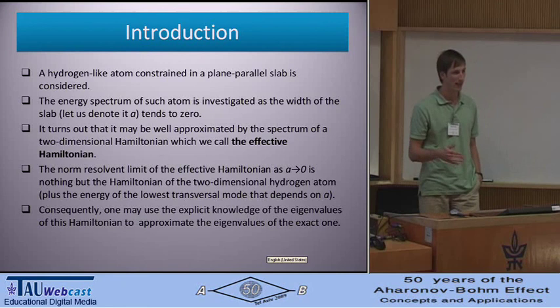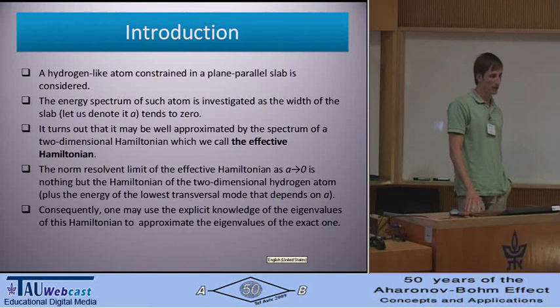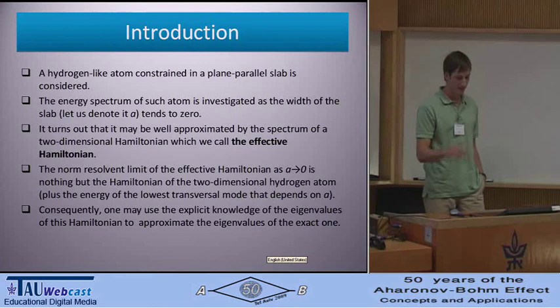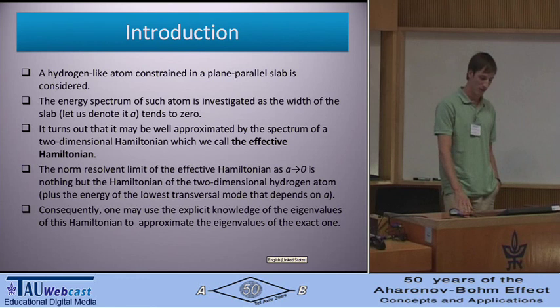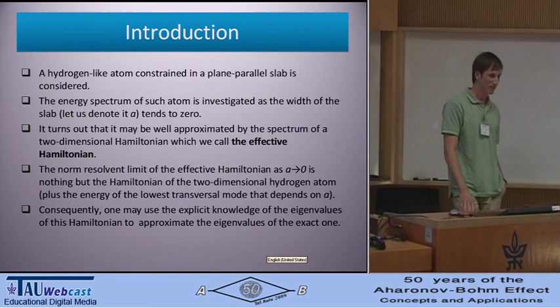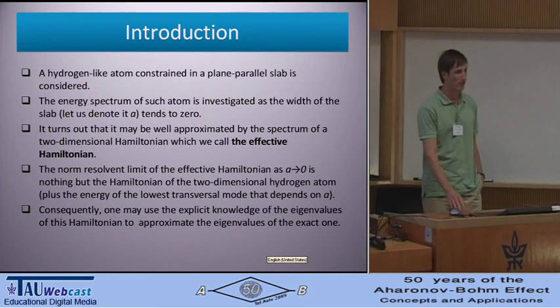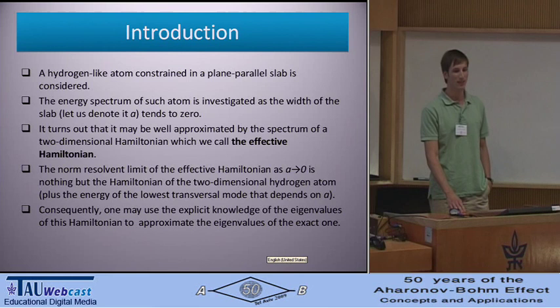The effective Hamiltonian approximates the original exact Hamiltonian in some way, but is not trivially solvable. Nevertheless, we proved that the norm-resolvent limit of the effective Hamiltonian, as the width of the slab tends to zero, is nothing but the Hamiltonian of the two-dimensional hydrogen atom plus the energy of the lowest transversal mode, which naturally depends on the slab parameter.